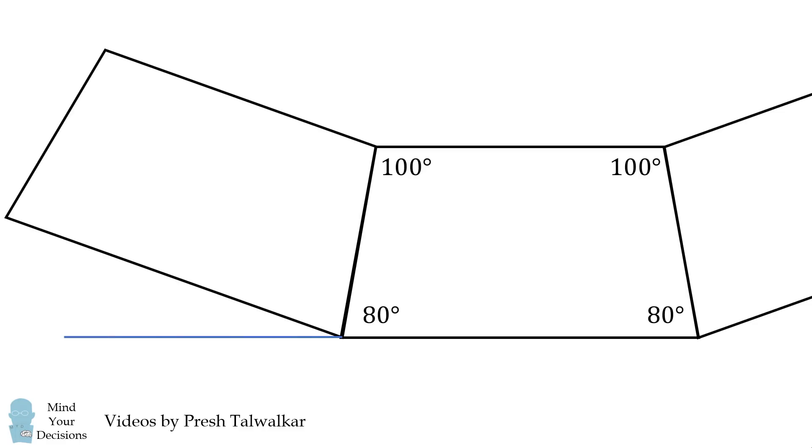Then calculate this exterior angle around the closed ring. Since we have an 80 degree angle here, this exterior angle will be 180 minus 80 minus 80, which simplifies to be 20 degrees.